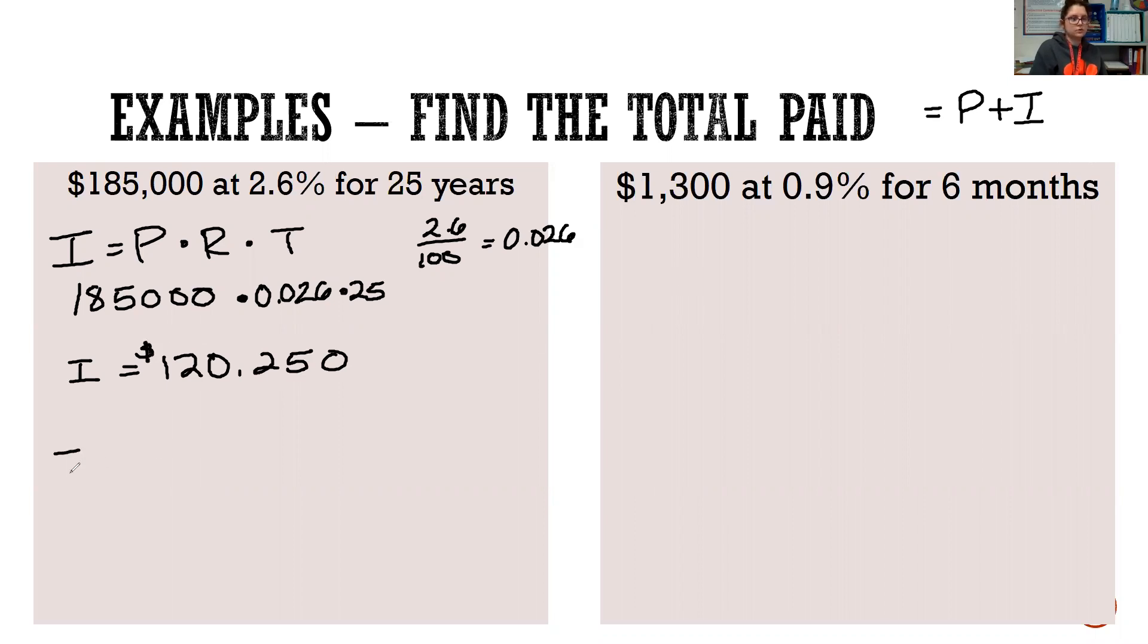So now we're looking for the total that we will pay back, the principal plus the interest. So P plus I. So we have $185,000 plus $120,250. So that gives us, you will pay back a total of $305,250. So your total you'll end up paying for your house as you pay back your loan over 25 years is almost double what you bought it for.